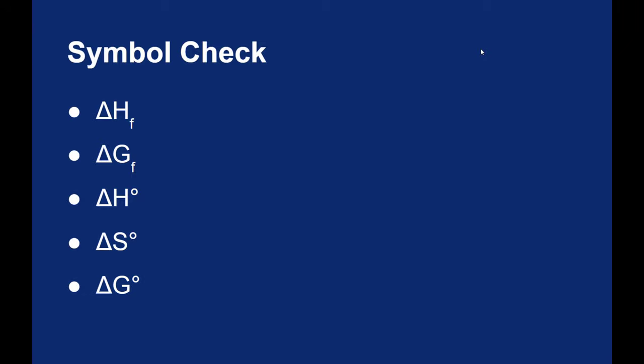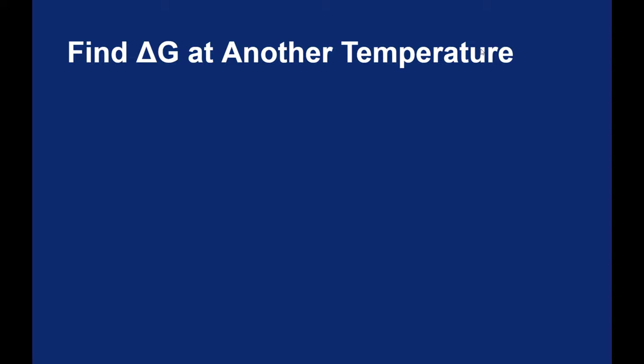And then we've seen these degree symbols: ΔH°, ΔS°, and ΔG°. The degree symbols referring to standard conditions, one atmosphere and 25 degrees Celsius. We've seen the ΔG at standard conditions.